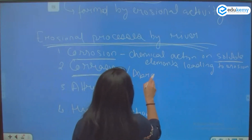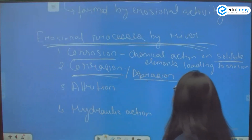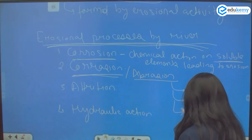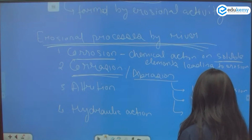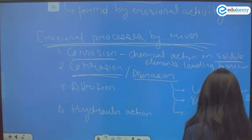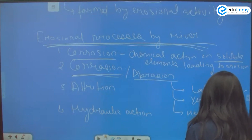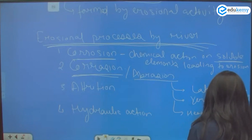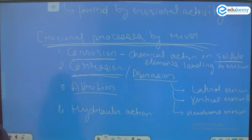Corrasion is also known as abrasion. Abrasion takes place in three forms: lateral erosion, vertical erosion, and headward erosion. The corrasion takes place via lateral erosion, vertical erosion, as well as headward erosion.